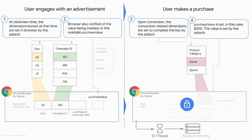One important callout, which we will also discuss more in future slides and the NoiseLab demo, is the concept of scaling. When an ad tech is setting the associated purchase value, they can scale this value based on the contribution budget. By scaling this value, noise will have lower impact. We will go into more detail regarding this in a later section.